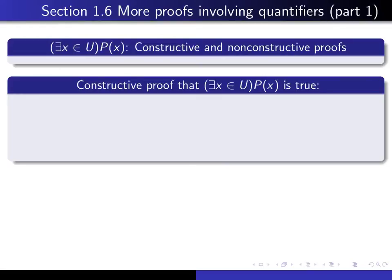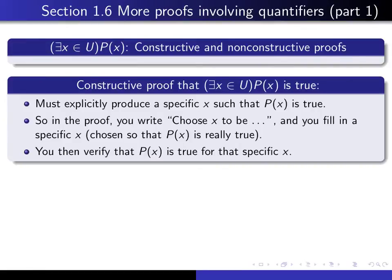Let's begin by discussing what we mean by a constructive proof of this statement. By constructive proof, we mean that we produce explicitly a very specific x for which P(x) is true. So when you're writing up your proof, all you have to do is say something like,